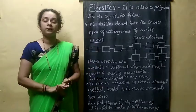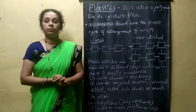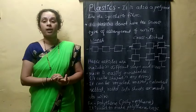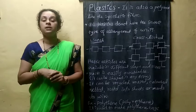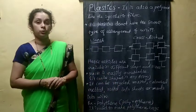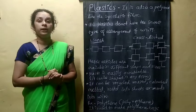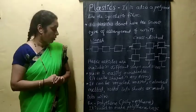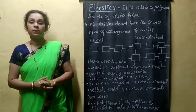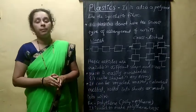An example of plastic: a very commonly used example is polythene. We use polythene bags for shopping and to carry different materials. Polythene is made up of many ethylene molecules combined to form polyethylene — it is a polymer. It is a very good example of plastic.